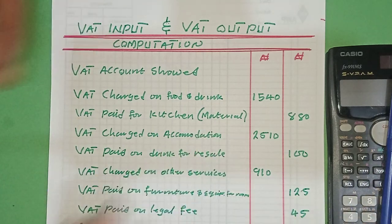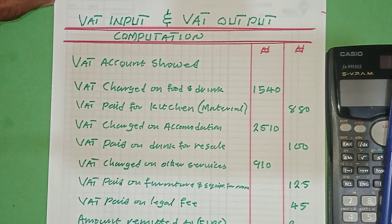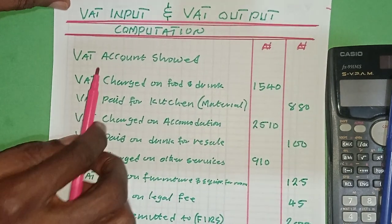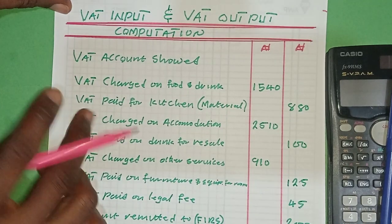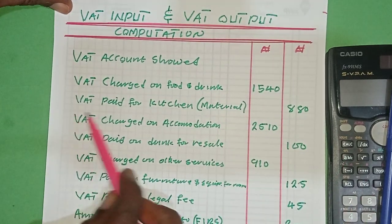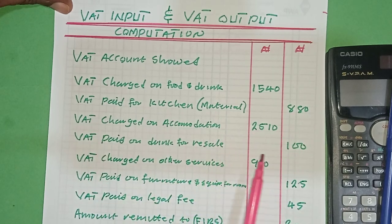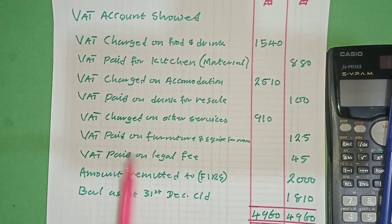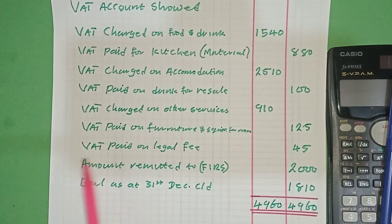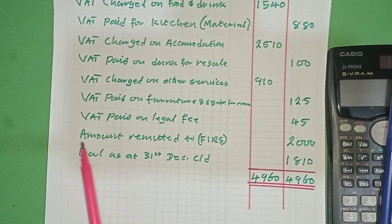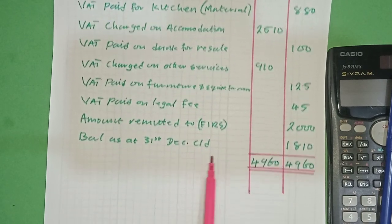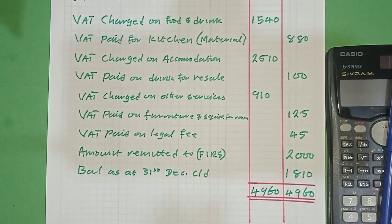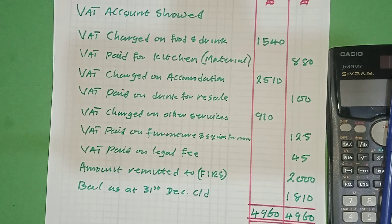Now here is a question, a VAT account presented to us. The VAT account shows: VAT charged on food and drinks, VAT paid on kitchen material, VAT charged on accommodation, VAT paid on drinks for sale, VAT charged on other services, VAT paid on furniture and fitting, VAT paid on legal fee, the amount remitted to FIRS, and the balance.